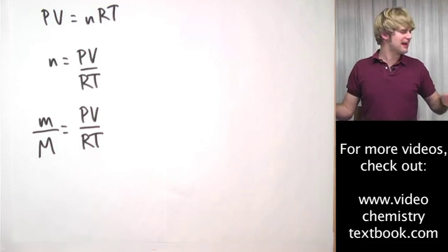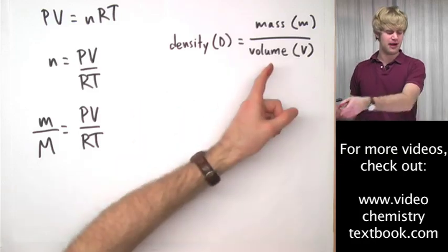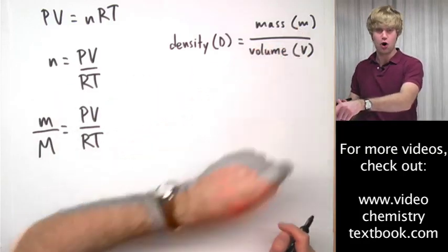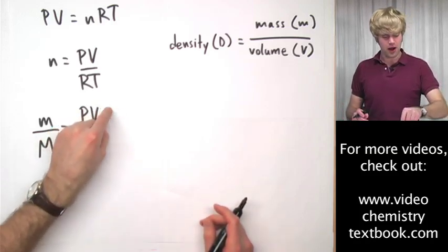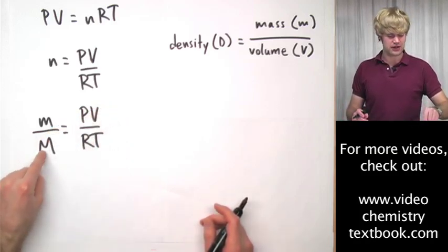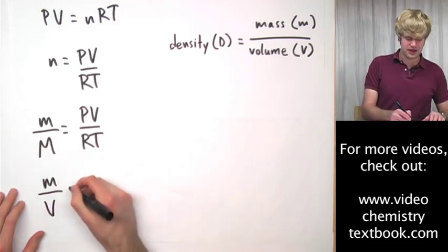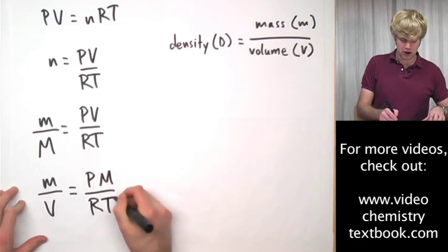How are we going to get density into the equation? Remember density is mass divided by volume. So let's rearrange this to get mass over volume. What I'm going to do is I'm going to move this M up here and I'm going to move this V down here. So I'm going to get M divided by V equals PM divided by RT.